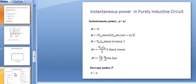The next point is instantaneous power in a purely inductive circuit. A typical exam question: show that the average power consumed by a pure inductor is 0. The expression for instantaneous power is obtained by taking the product of instantaneous voltage and current. P = V × I, where V = Vm sin(omega t) and I = Im sin(omega t − π/2).